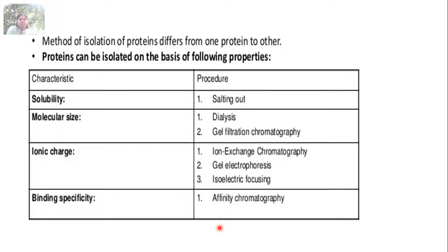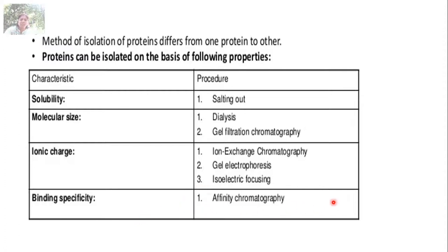After cell disruption, you proceed specifically to isolation of protein. Methods of isolation differ from one protein to another because proteins vary in their properties. Proteins can be isolated based on solubility — using salting out; based on molecular size — using dialysis or gel filtration chromatography; based on ionic charge — using ion exchange chromatography, gel electrophoresis, or isoelectric focusing; and based on binding specificity — using affinity chromatography, which is based on specific biological interaction.